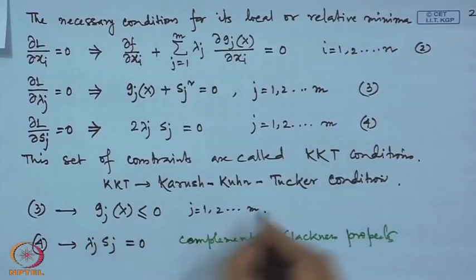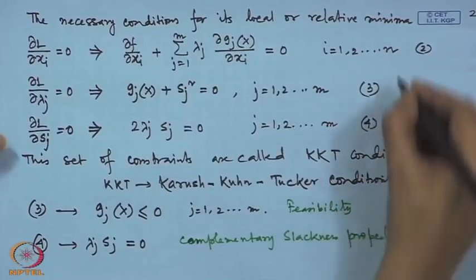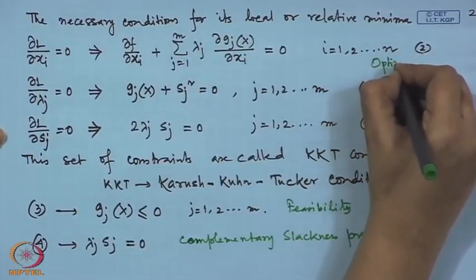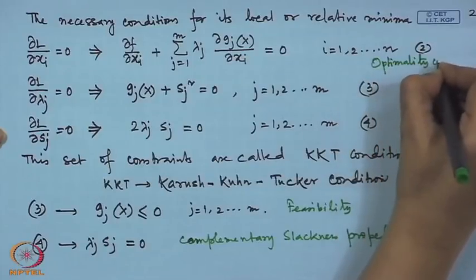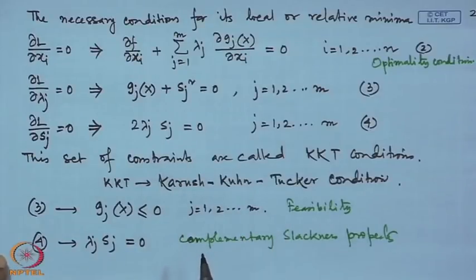Together, the feasibility conditions and optimality conditions are called the Karush-Kuhn-Tucker (KKT) conditions. These are very important for solving non-linear programming problems. KKT conditions are also applied for linear programming when dealing with several constraints together. For finding local optima of a non-linear programming problem with several inequality constraints, we adopt this same process.